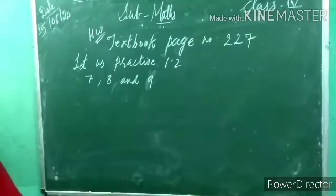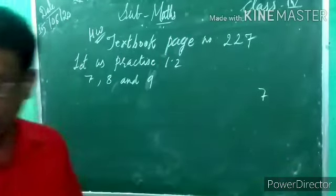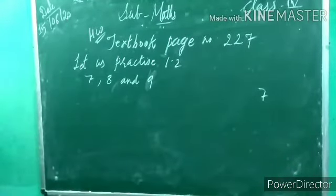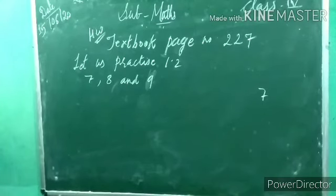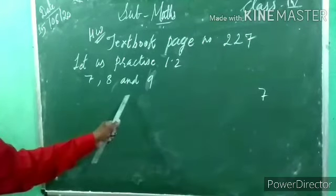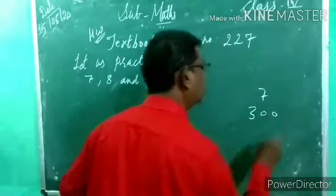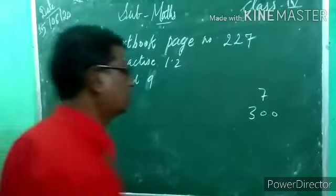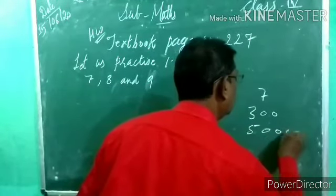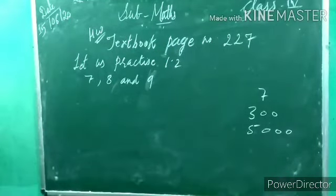Question number 7: counting by 7, so you have to add 7. Write 4 numerals from 19,385. I explained 3 examples — do it the same way. Question number 8: counting by 300, so you have to add 300. Question number 9: counting by 5,000, so you have to add 5,000. Write 4 numerals for each.